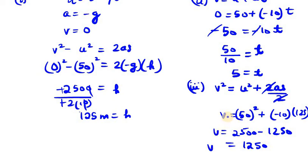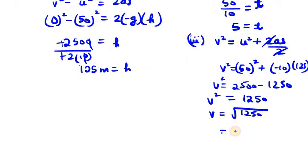Now we have v² on the left hand side, so we need to take the square root of 1250. When you take the square root of 1250, you will get 35.35 meters per second.